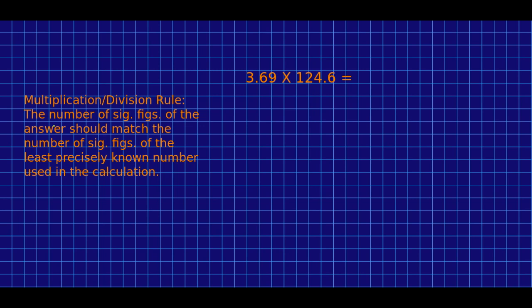Multiplication and division rule is that the number of sig figs of the answer, when you multiply or divide, should match the number of sig figs of the least precisely known number used in the calculation. The key phrase here is least precisely known. What does that mean? That means the number with the fewest sig figs.